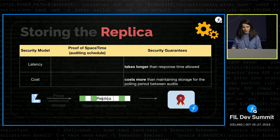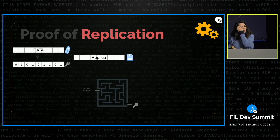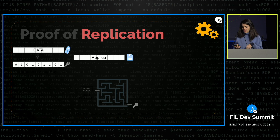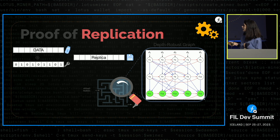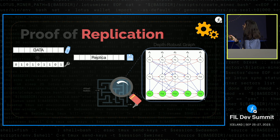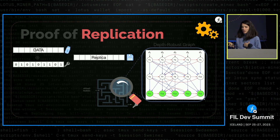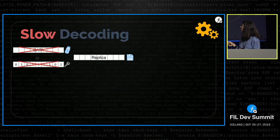Proof of Replication works by taking the data, sealing it with a key, and obtaining the replica. We deliberately chose a very slow, computationally heavy encoding process — generating the key takes a lot of time intentionally — because we want the security guarantee that regenerating the replica after deleting it costs more in time than simply storing it and replying to the challenge.